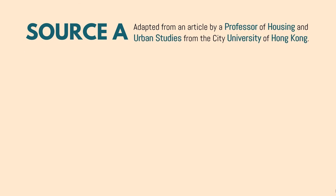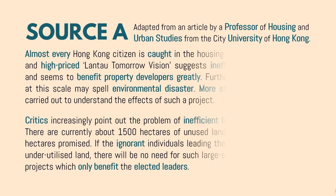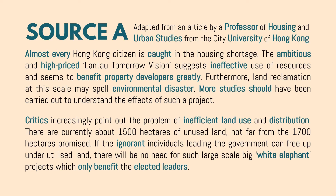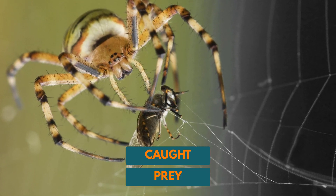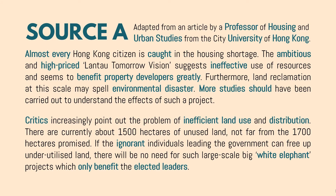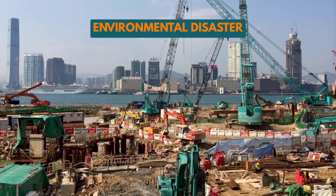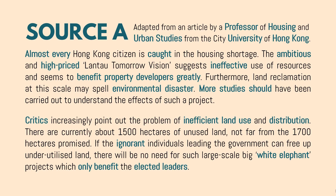Let's examine the source itself. First, we need to look at the provenance. Provenance shows that the author is actually a professor of housing and urban studies from City University of Hong Kong. We need to examine the language and the word choice rather than provenance — it will allow us to understand whether housing is affordable or unaffordable. Housing is definitely unaffordable because the government has not been doing a very good job of allocating the subsidies. When the word 'caught' is used, it's talking about some sort of prey, which usually denotes some form of victim. Then we talk about the 'ambitious and high-priced' project — according to the author, it is ineffective use of resources and actually benefits property developers. So on one hand, we have the victims which are Hong Kong citizens; on the other hand, we have the benefactors which are the property developers. Also, it is a form of environmental disaster according to the professor, and there is also inefficient land use and distribution.